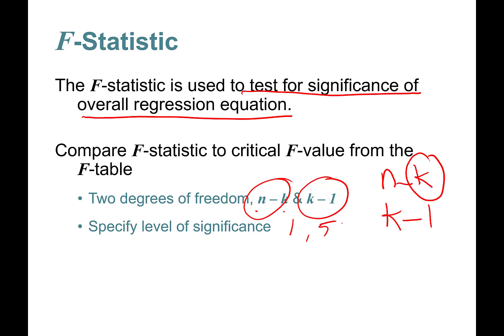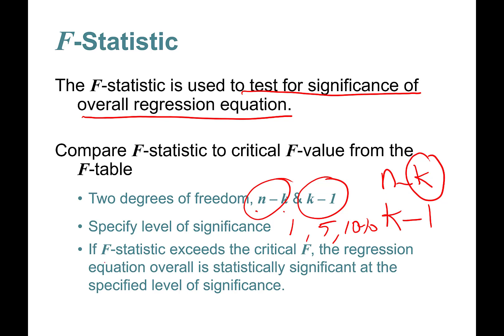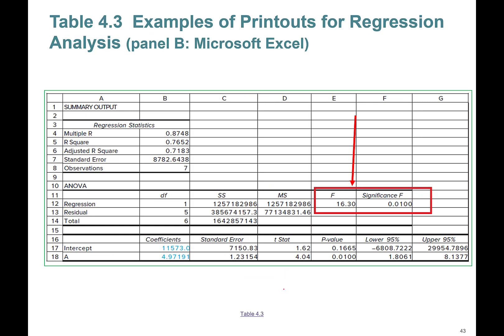You specify the significance level you're interested in: 1, 5, or 10 percent level of significance. If F statistic exceeds the F critical value, the regression equation overall is statistically significant at the specified level of significance.